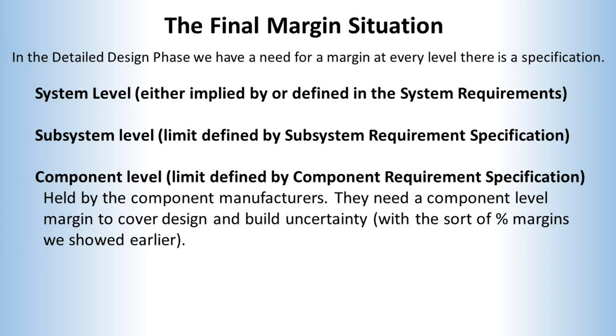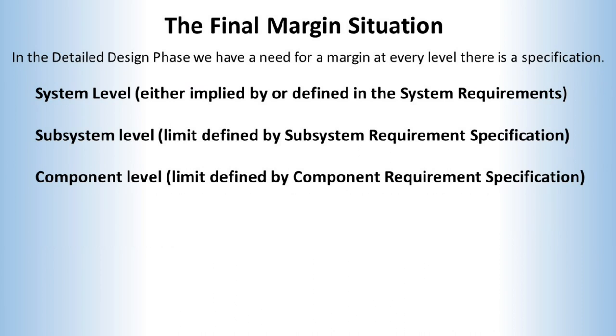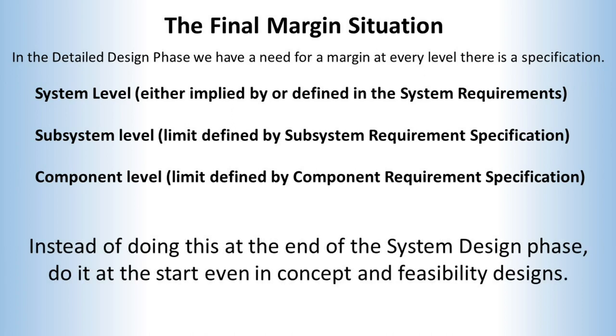Every component will also be made to a requirement specification, and like all other levels it will require a margin. How much margin will depend upon the maturity of the design and the production history — we have already discussed what levels are appropriate. So this is where we end up, and what I recommend is splitting out these various margins right at the start, even in concept and feasibility designs. On communication satellite projects that I worked on in the 1980s, we simply took all the component estimates, summed them up, and saw what margin we had — then made an overall judgment on that basis.